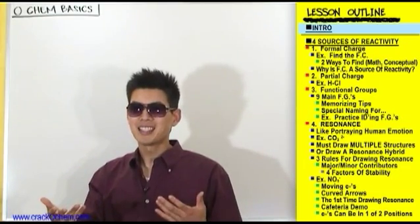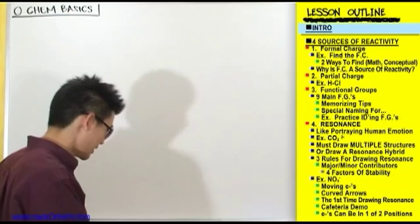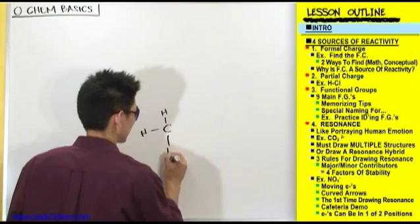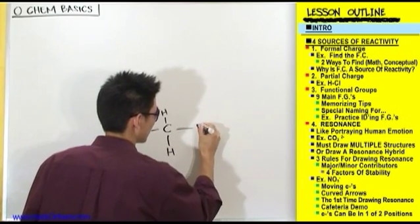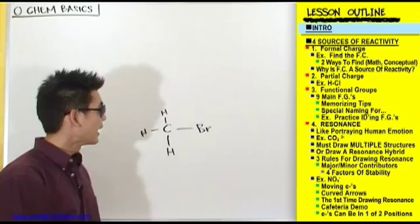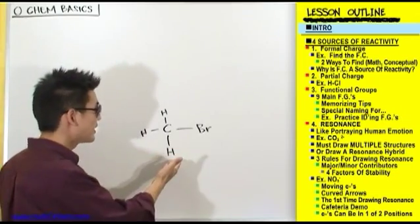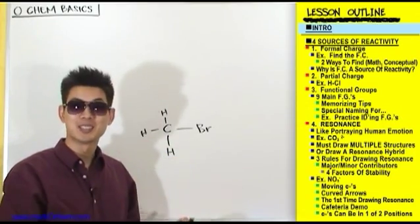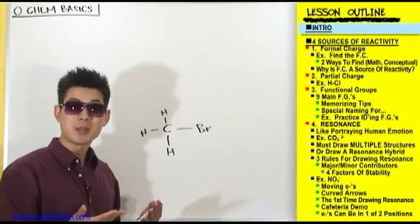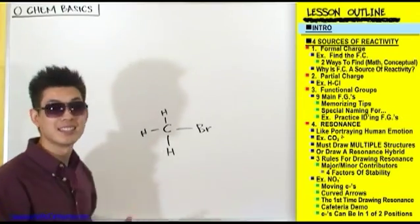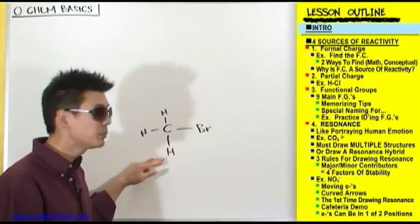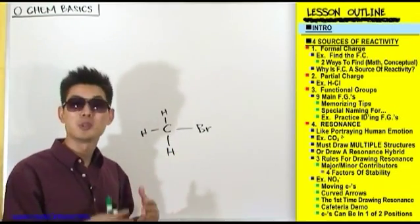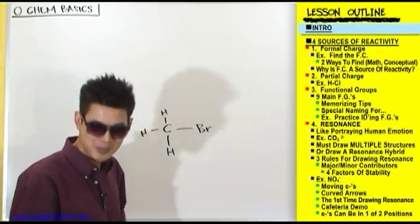What do I mean by reactivity? Well, when you look at a compound, you want to be able to see where this thing is going to react — which atom of this compound is most likely to react and why. When you look at a compound, you want to be able to look at it and see which atom is most likely to react and why.